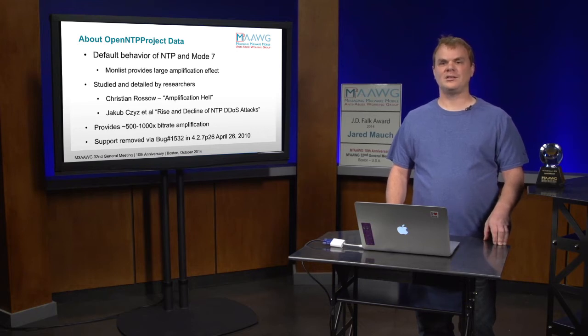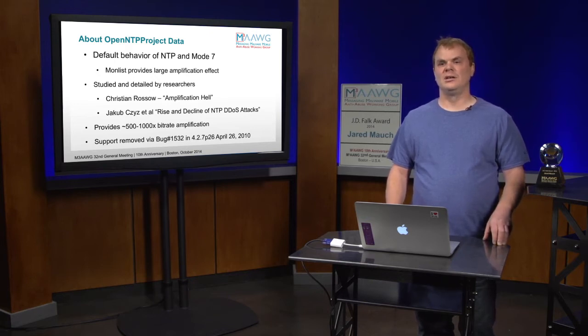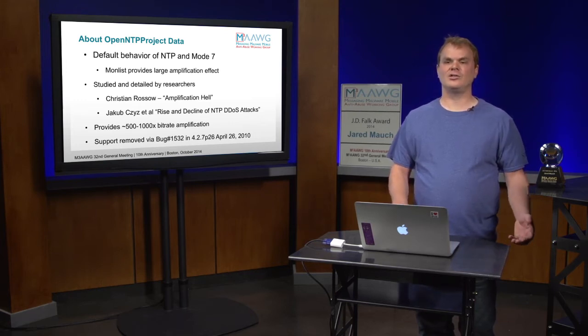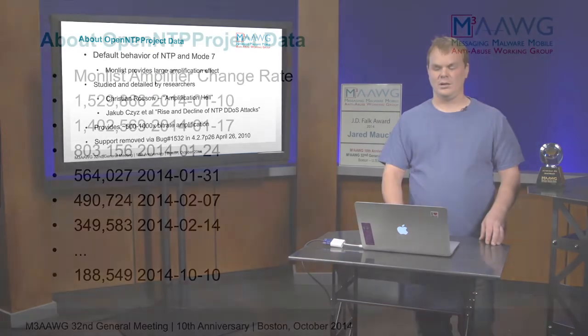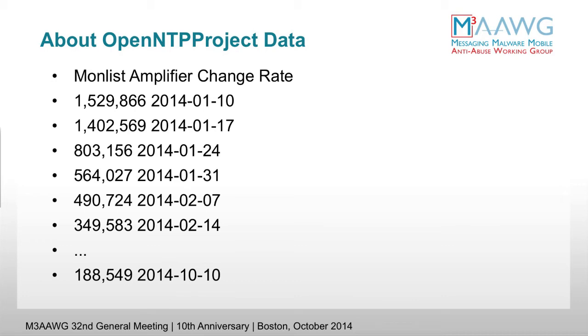NTP is great if you're an attacker because it provides somewhere between five and a thousand times the amplification — you can send four bytes and get back 4,000. The support for the feature they ended up using, MonList, was removed in April 2010 from NTP, but it takes a long time for people to actually pick up fixed software. At the beginning of 2014, there were about 1.15 million NTP amplifiers on the internet. Over the year, we've seen rapid remediation, so it's just under 200,000 in October. Most of that was resolved by network service providers filtering NTP activity entirely from their networks.